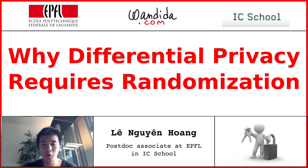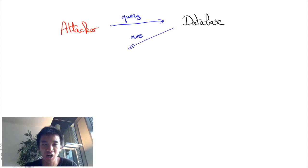In this video, we will see why differential privacy requires randomization. The basic idea of differential privacy is that the presence of any individual user in a database should not be detectable by any attacker.